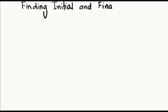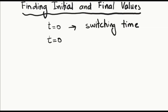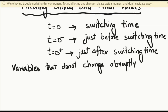Now, understanding how to find initial and final values in second order circuits is crucial. The initial values refer to the circuit's condition at the beginning when t equals zero, which is called the switching time — when the switch changes its position. t equals zero negative denotes the time just before the switching time, and t equals zero positive denotes the time just after the switching time.